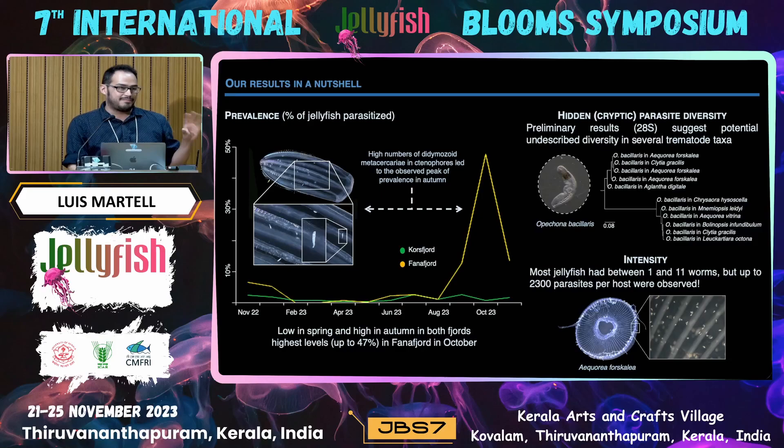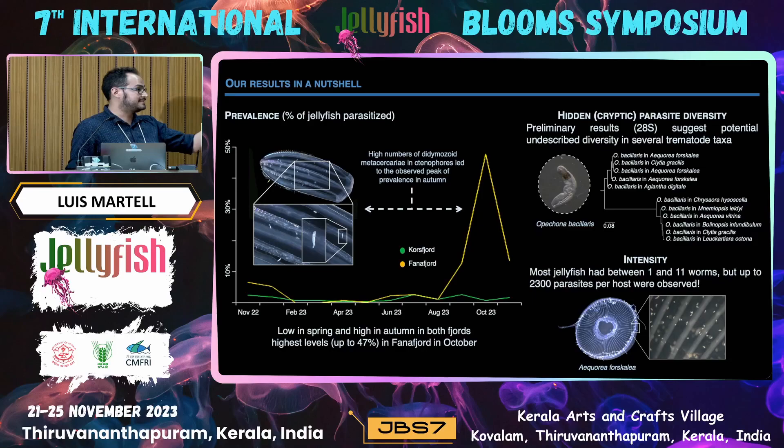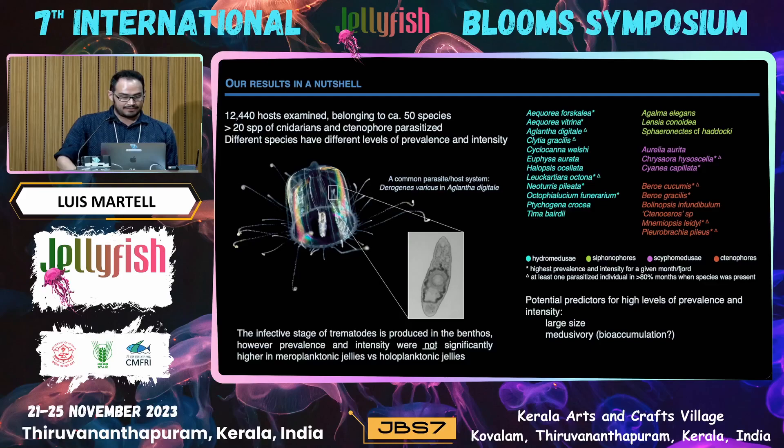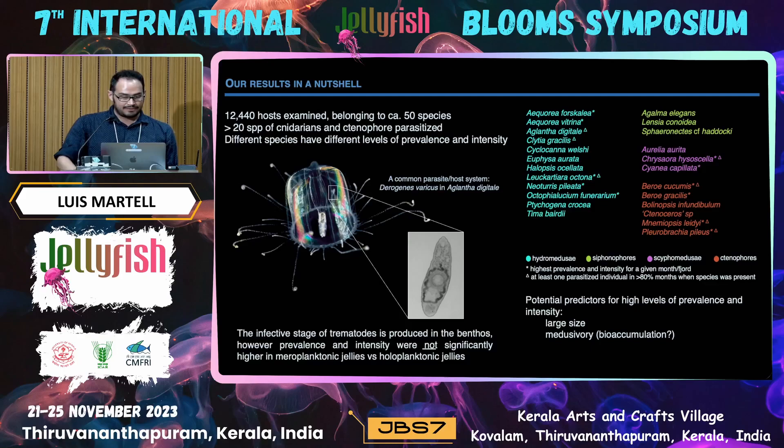Regarding intensity levels, most jellies when parasitized have between one and eleven worms, but some Aurelia and Chrysaora have really — it's amazing — this is an estimation based on octants because we didn't count, or rather I didn't force our student to count every single worm. In total we checked 12,400 jellies.